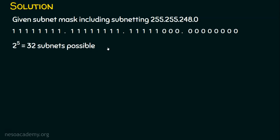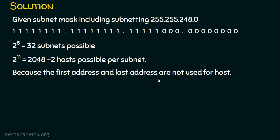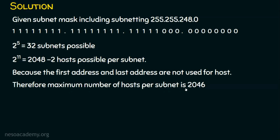For hosts per subnet: out of the 16 bits in the last two octets, 5 bits are reserved for subnet identification, leaving 11 bits for hosts. So 2^11 = 2048 IP addresses are possible. However, the first address (network address) and the last address (broadcast address) cannot be assigned to hosts, so we subtract 2. Therefore, 2048 − 2 = 2046 hosts are possible per subnet.